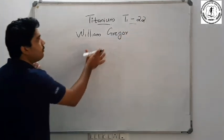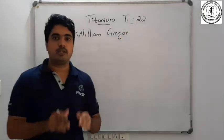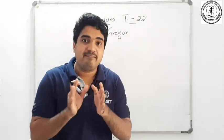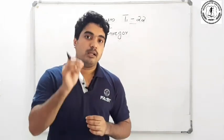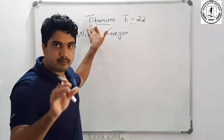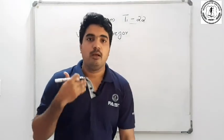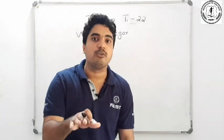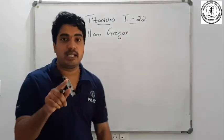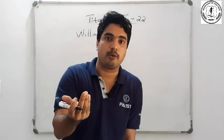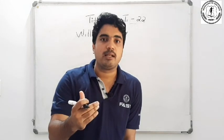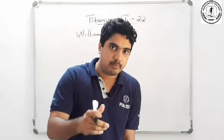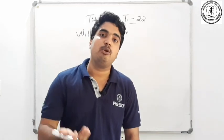William Gregor is the discoverer of Titanium. The name of the alloy made from aluminium is Duralumin.